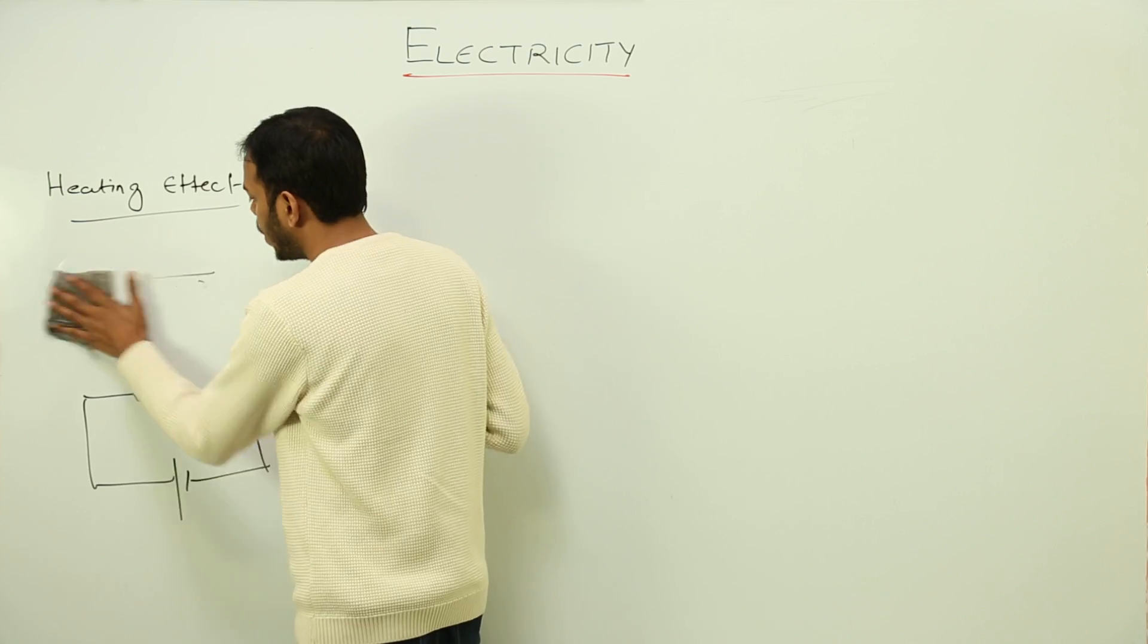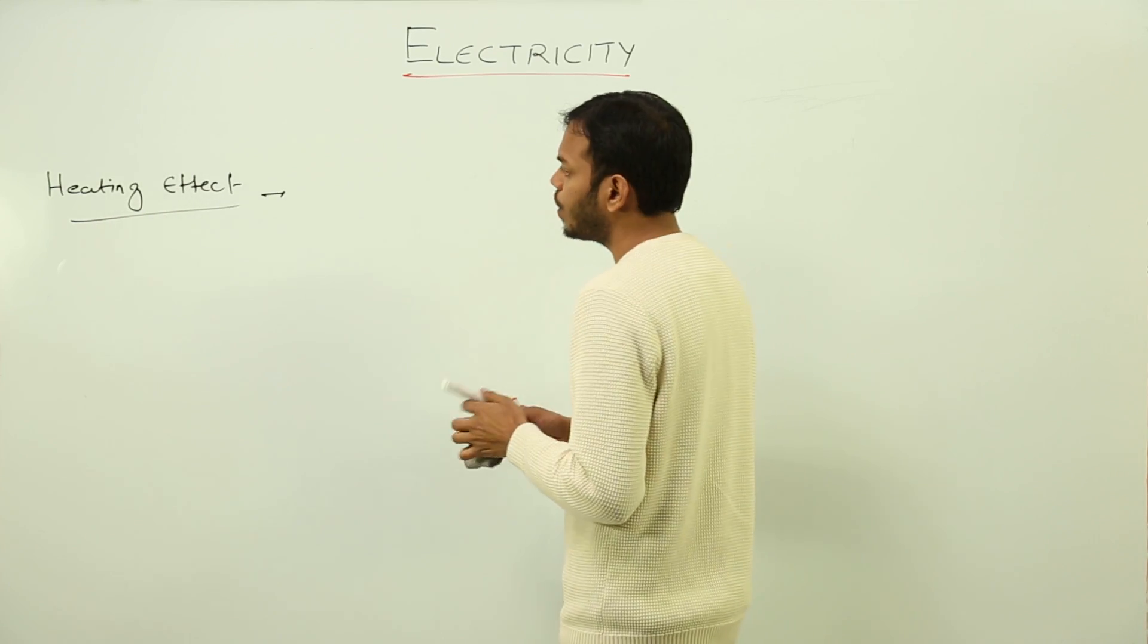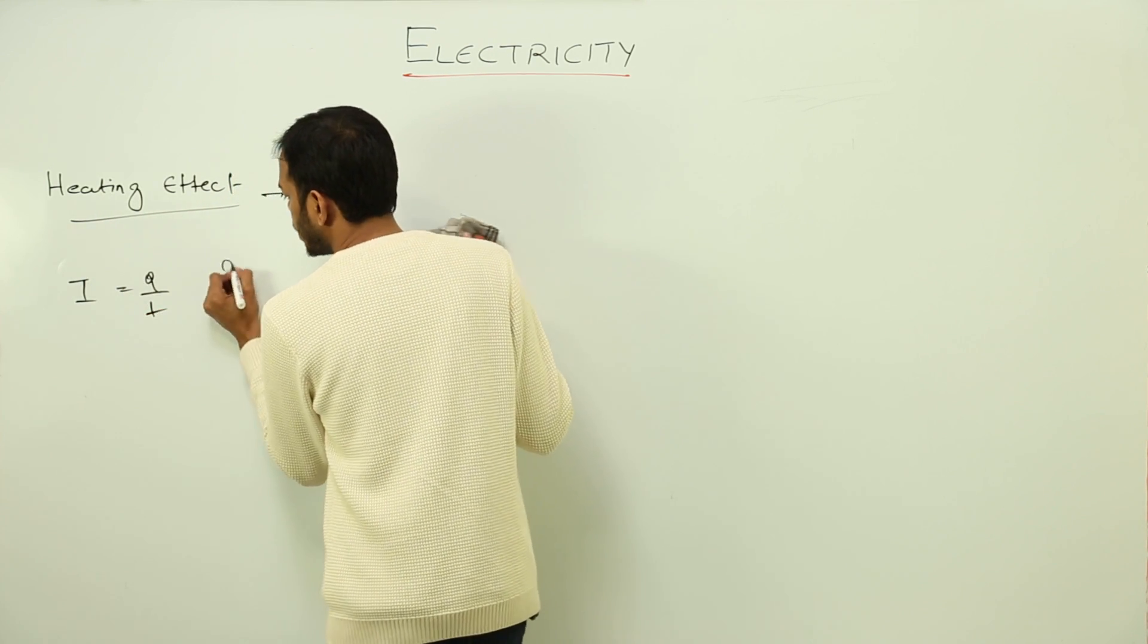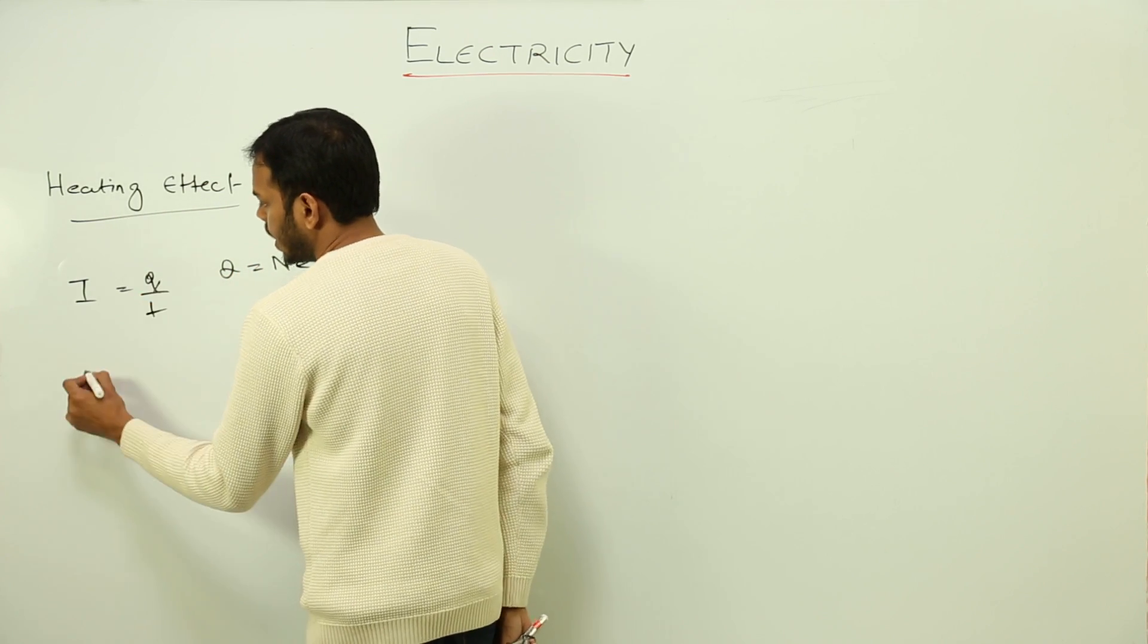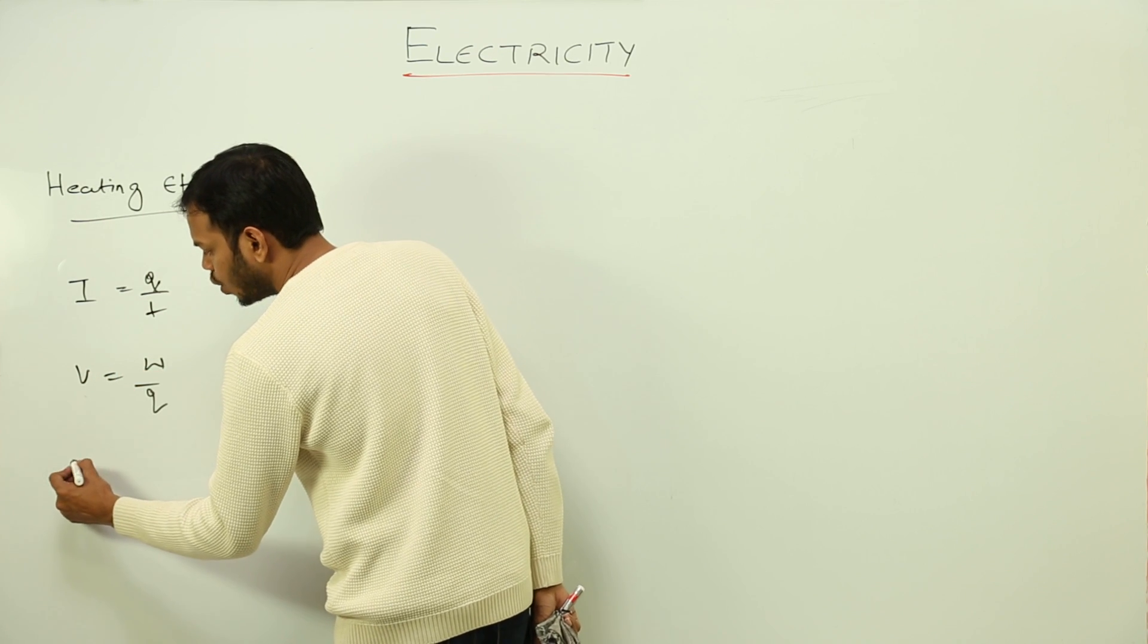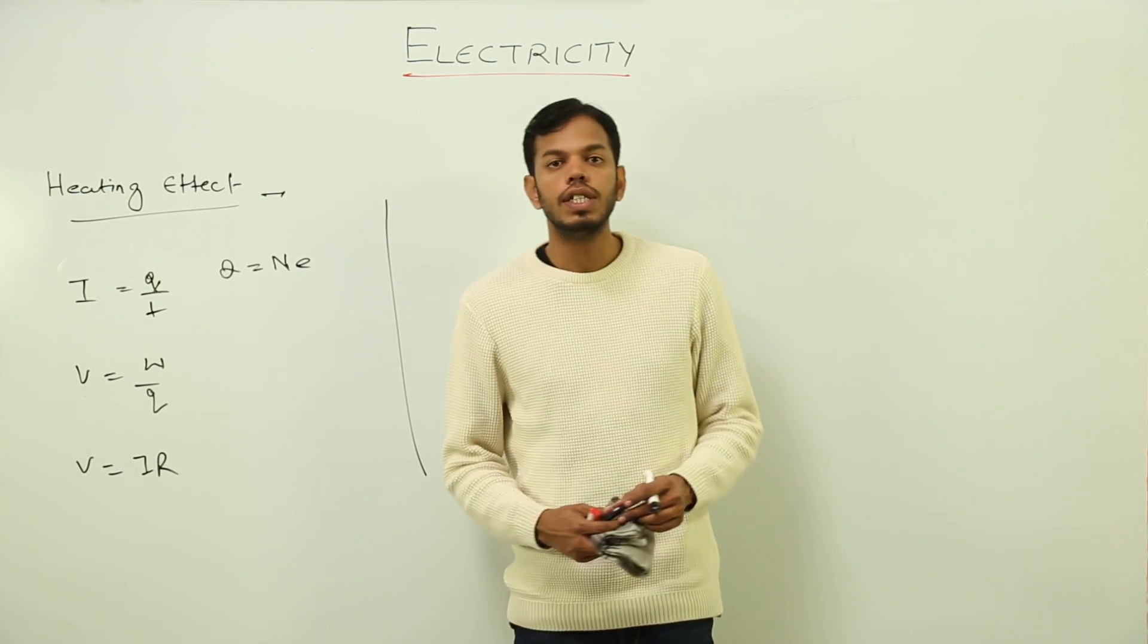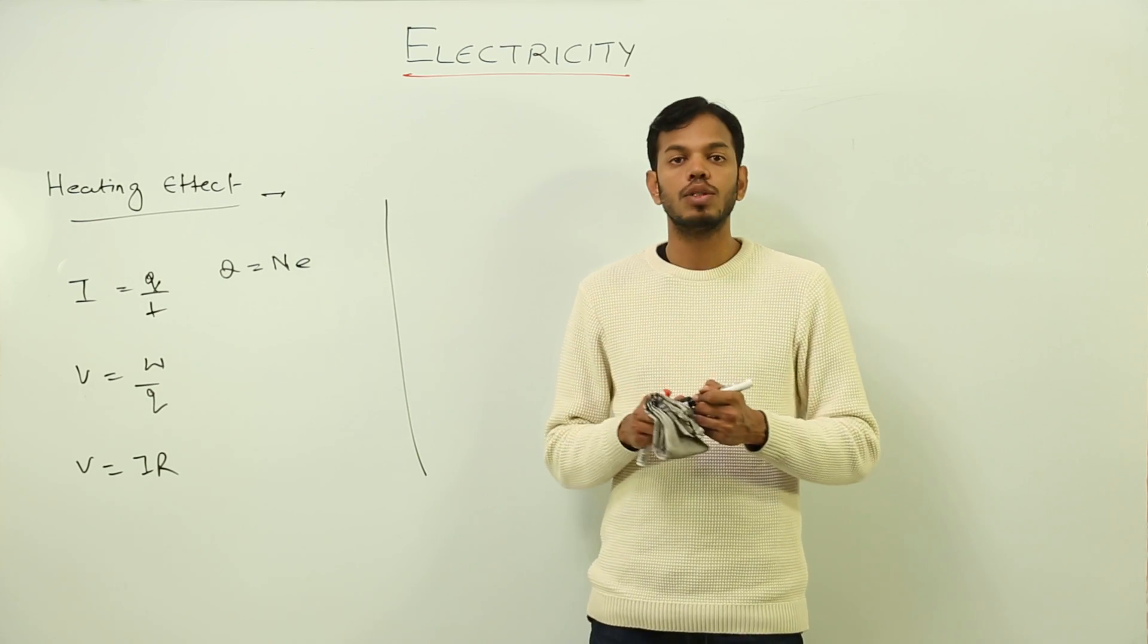So that is what we mean by heating effect of current. So let's derive a formula for heating effect. What are the formulas do we know till now? First of all, we know that current is rate of flow of charge. Total charge is number of electrons into electronic charge. Then we know V is work done upon charge.